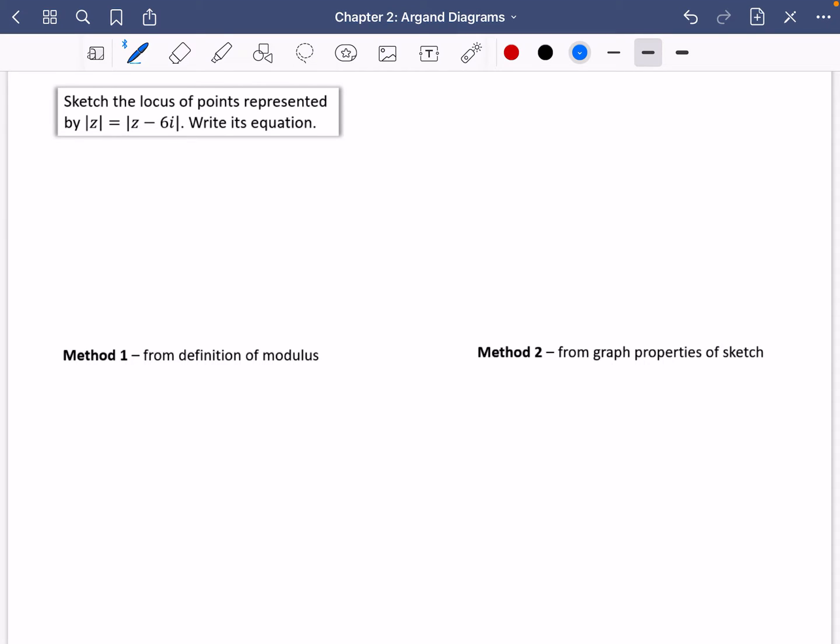We've got the theory now of that particular loci, the perpendicular bisector one. We're now going to try and do it with some quite simple examples. This first one says sketch the locus of points represented by the modulus of Z equals the modulus of Z minus 6i. Write its equation. This one is definitely going to be easier to find the equation after we've done the sketch, so I'm going to begin by drawing the axes that we're going to have here.